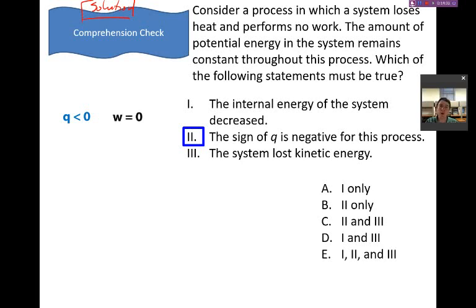We know that the amount of work that is done must be zero. Therefore, when we sum together the total work and the heat exchange, we can just relate the heat to the change in internal energy. Since the heat was negative, the change in internal energy must also be negative, telling us that number one is true.